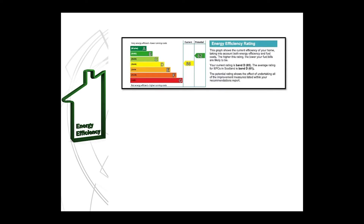Next on the front page of the EPC is the energy efficiency rating, which shows the current and potential energy ratings for the dwelling. It's worth noting that in 2018 new regulations were introduced, meaning landlords could only rent out their property to potential tenants if the dwelling had an energy efficiency rating of E or better. If the dwelling's energy efficiency rating falls below level E, improvement measures must be carried out to increase the rating before new tenants can take on the property.